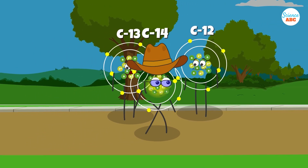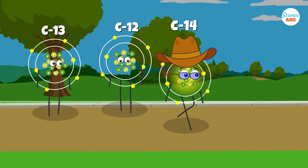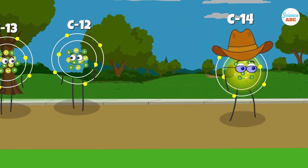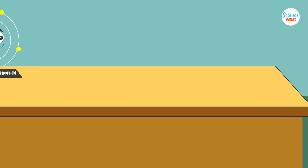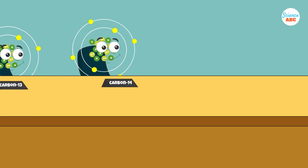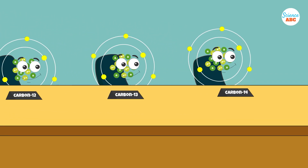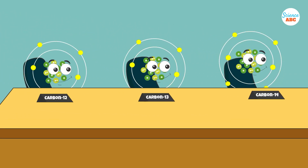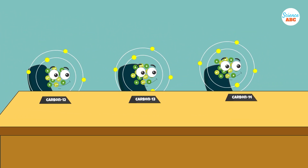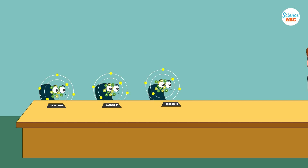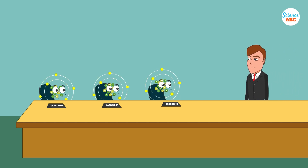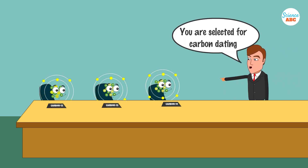It's so rare on Earth that only one out of one trillion carbon atoms is a carbon-14 isotope. Carbon-14 is radioactive, which means that it decays into stable atoms. This property makes carbon-14 the perfect candidate for estimating the age of organic materials dating back as far as 60,000 years, through a process called carbon dating.